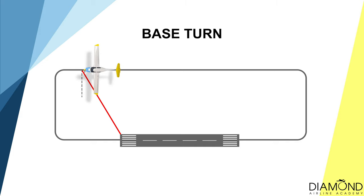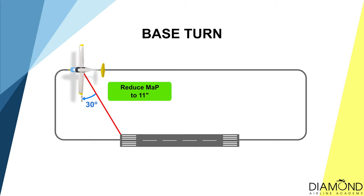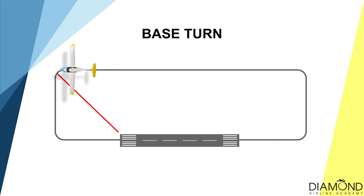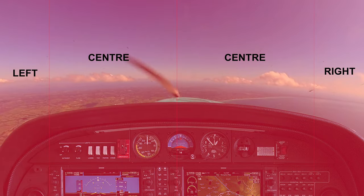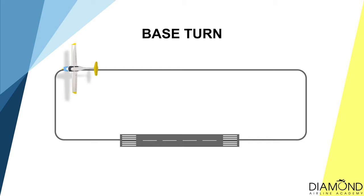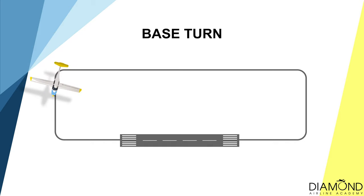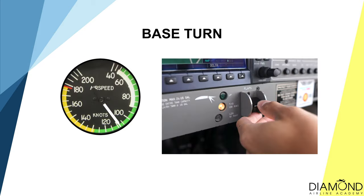After completing the pre-landing checks, maintain downwind tracking until the runway is 30 degrees behind the wing. At this point, start to reduce manifold pressure to 11 inches. When approaching 45 degrees to the runway, start to look out right, centre, left, then start the turn onto the base leg. Maintain height whilst power is reduced — because of that, speed will start to decrease.